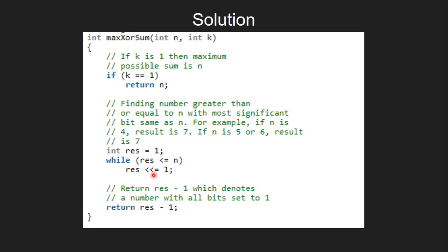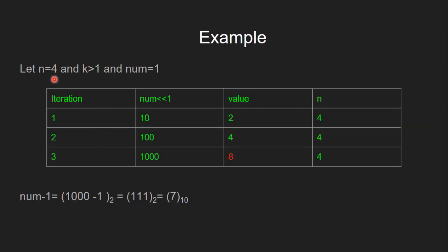Let's understand this using this table. Let's say we have n equals 4 and the value of k is greater than 1. We initialize num equals 1, which is equivalent to res that we just saw in the code. Now in each iteration, we left shift num by one position.